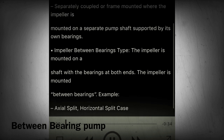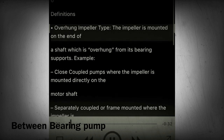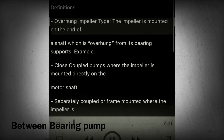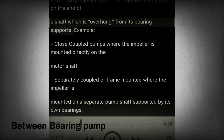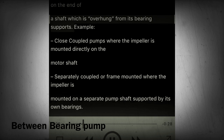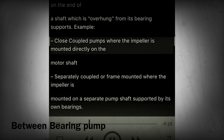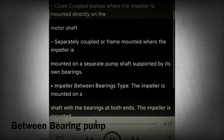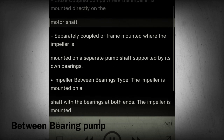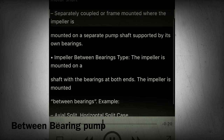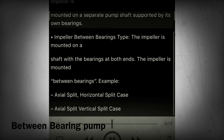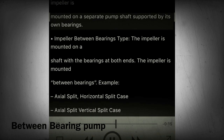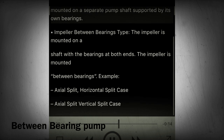Section 6 - Definitions. Overhung impeller type: the impeller is mounted on the end of a shaft which is overhung from its bearings and supports. Example: close coupled pumps where the impeller is mounted directly on the motor shaft; separately coupled or frame mounted where the impeller is mounted on a separate pump shaft supported by its own bearings.